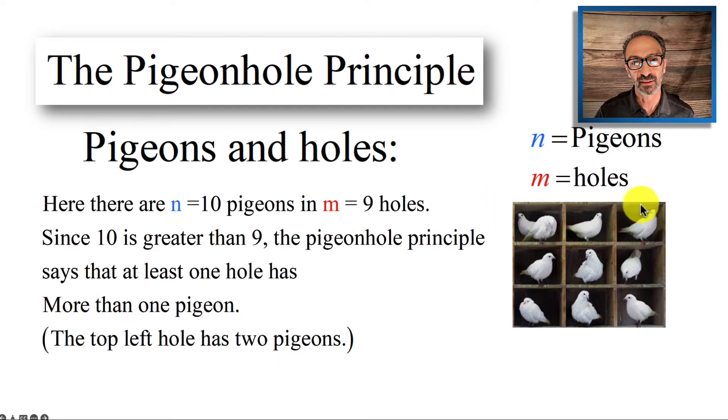If you look at the graph, I do have three by three which is nine spots, nine holes, but the number of pigeons is one more—this right here has two in it. Here there are n which is 10 pigeons and m equals 9 holes. Since 10 is greater than 9, the Pigeonhole Principle says that at least one hole has more than one pigeon. The top left hole has two pigeons.